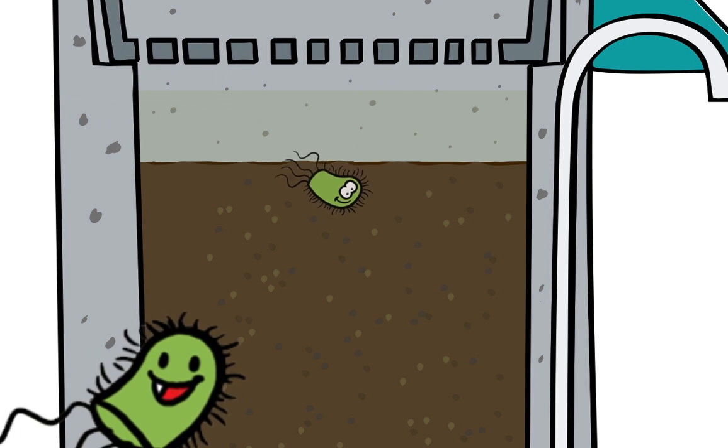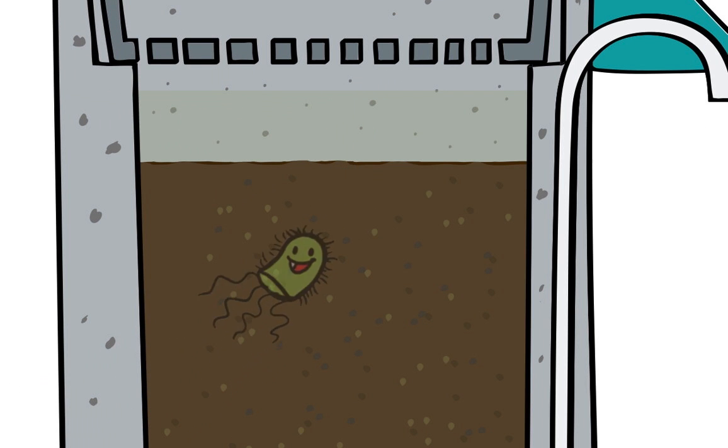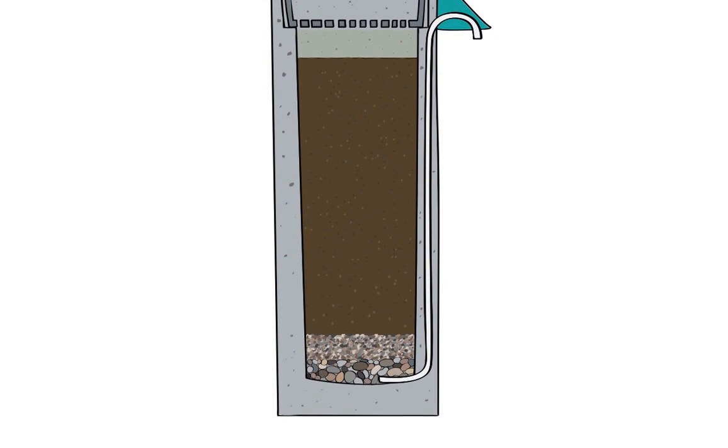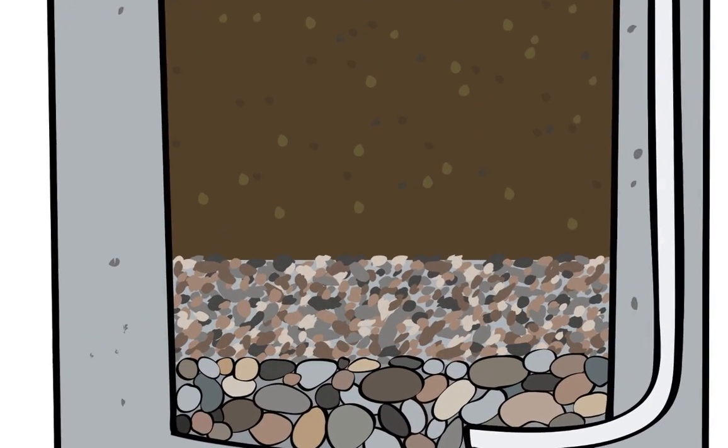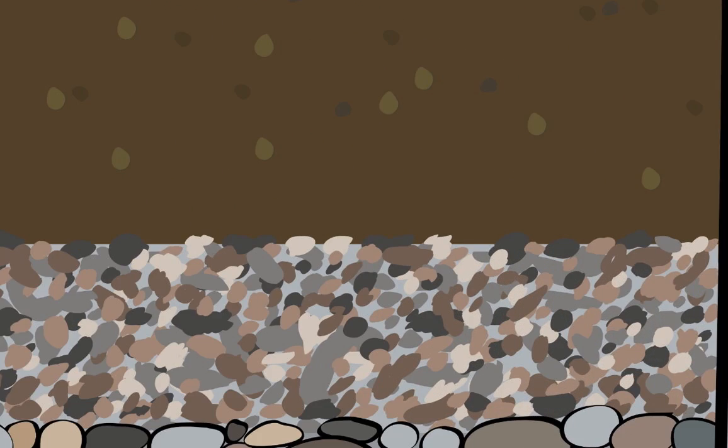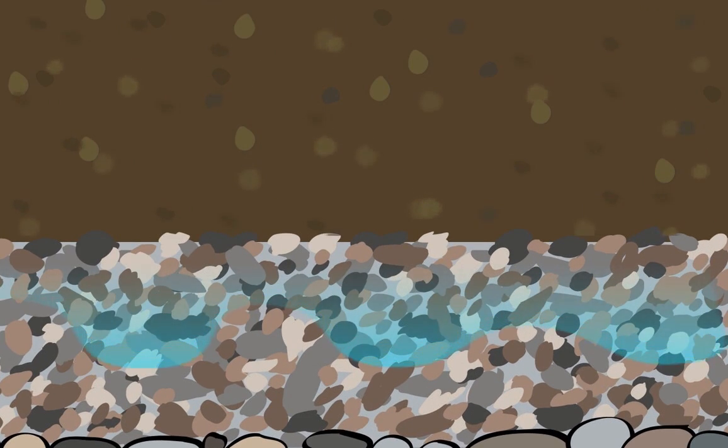The next layer under all the sand is the separation gravel. It's a layer of small gravel that is just big enough to stop the sand from settling further down, yet allows water to pass through.